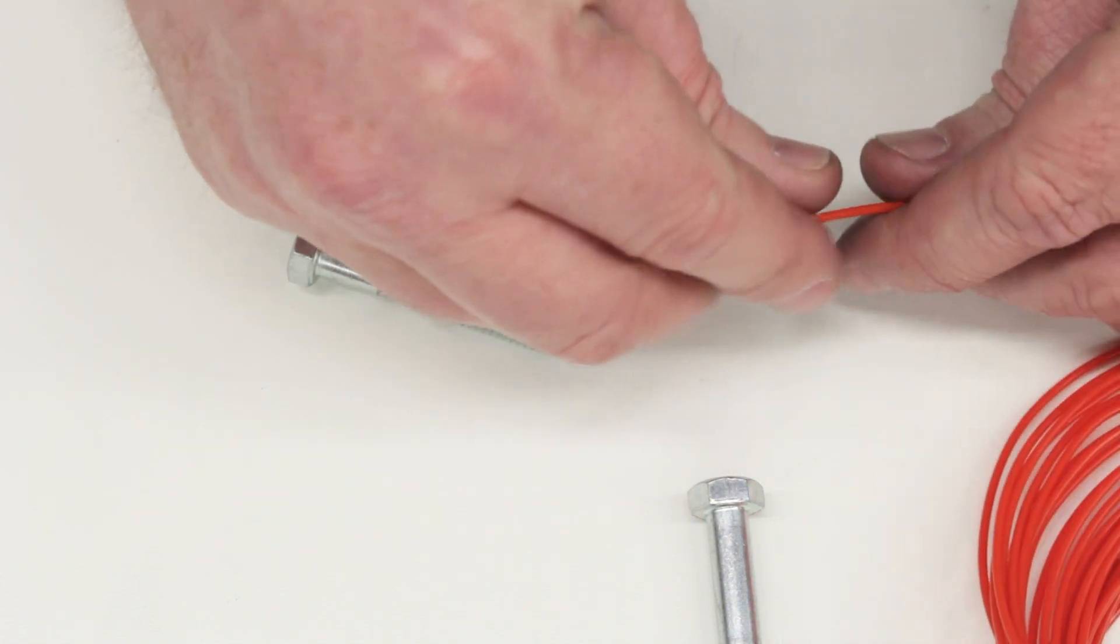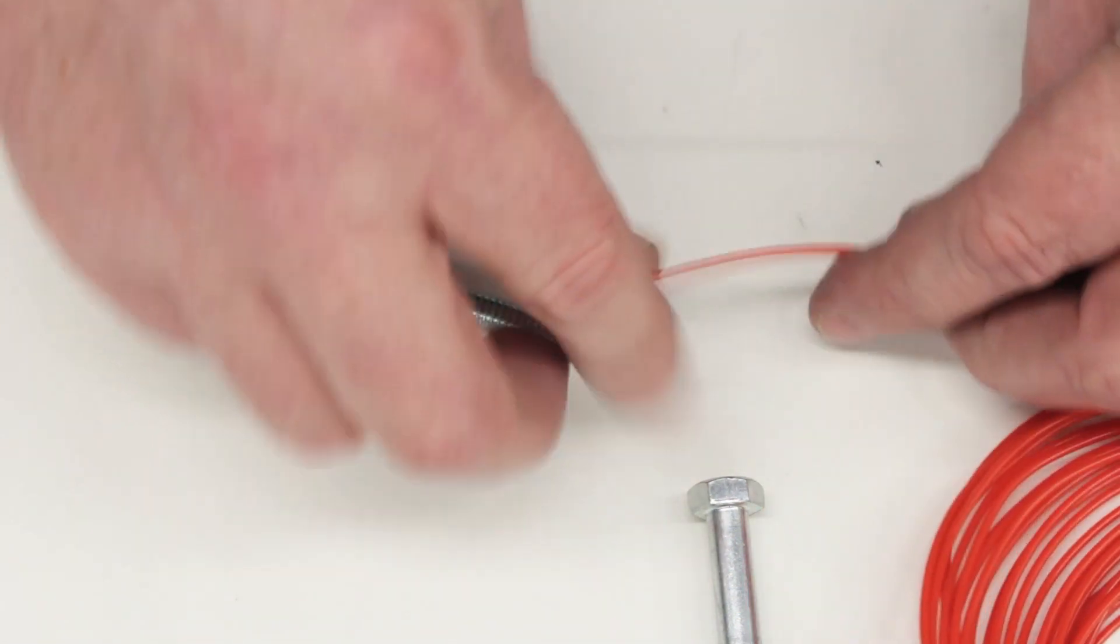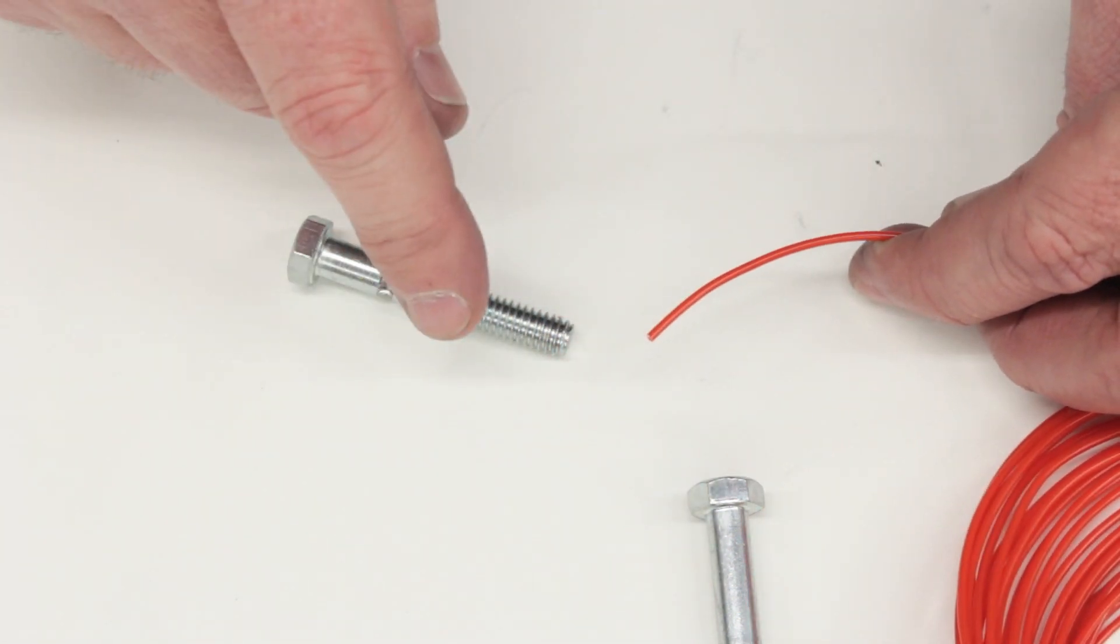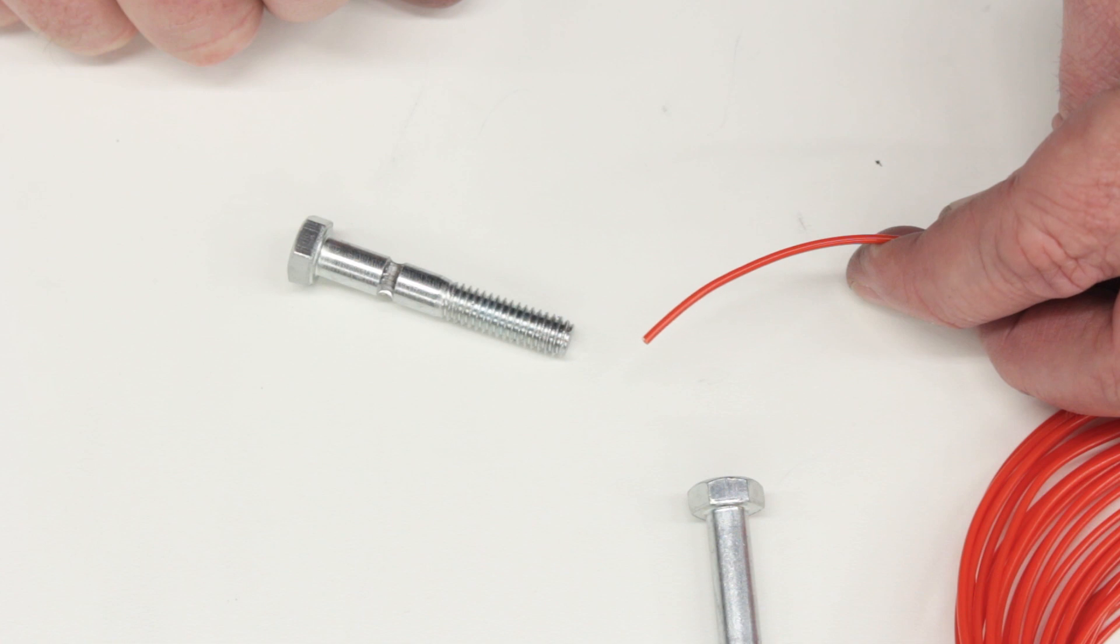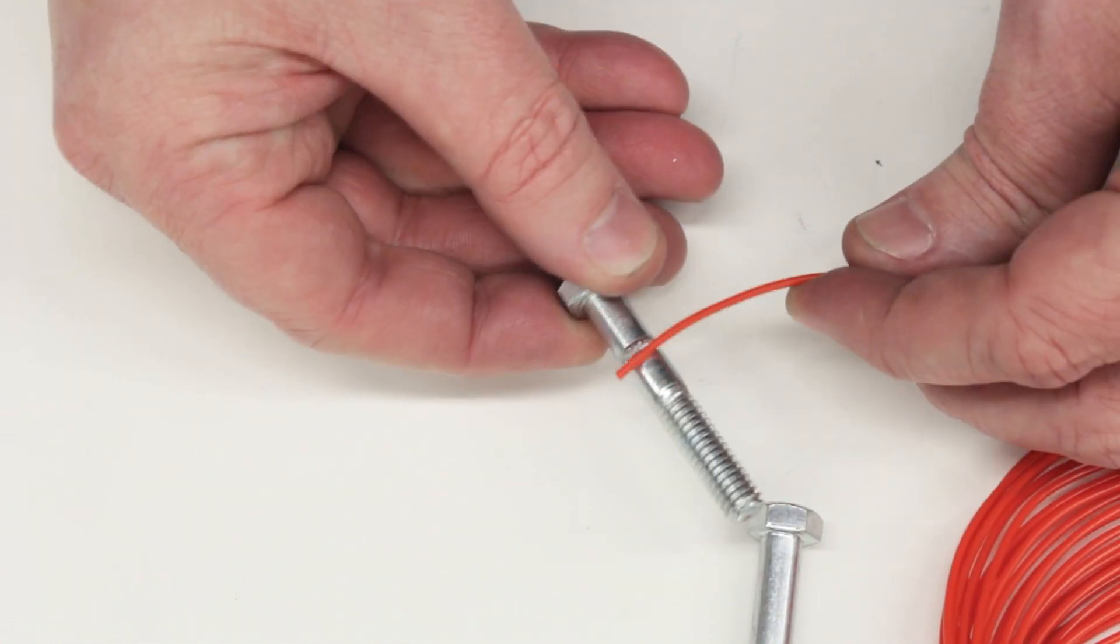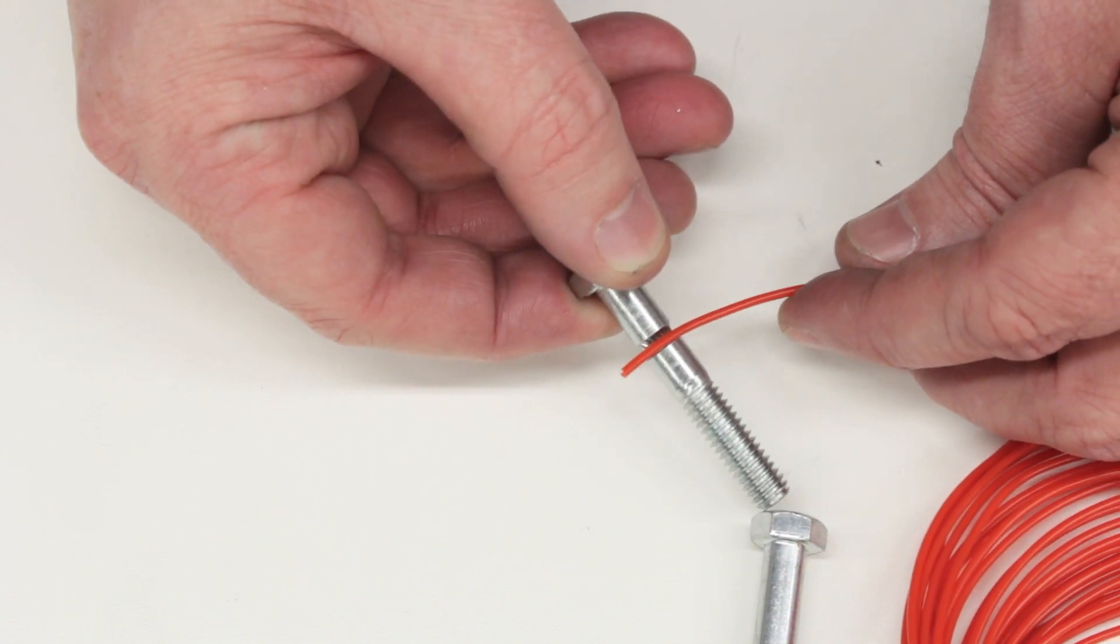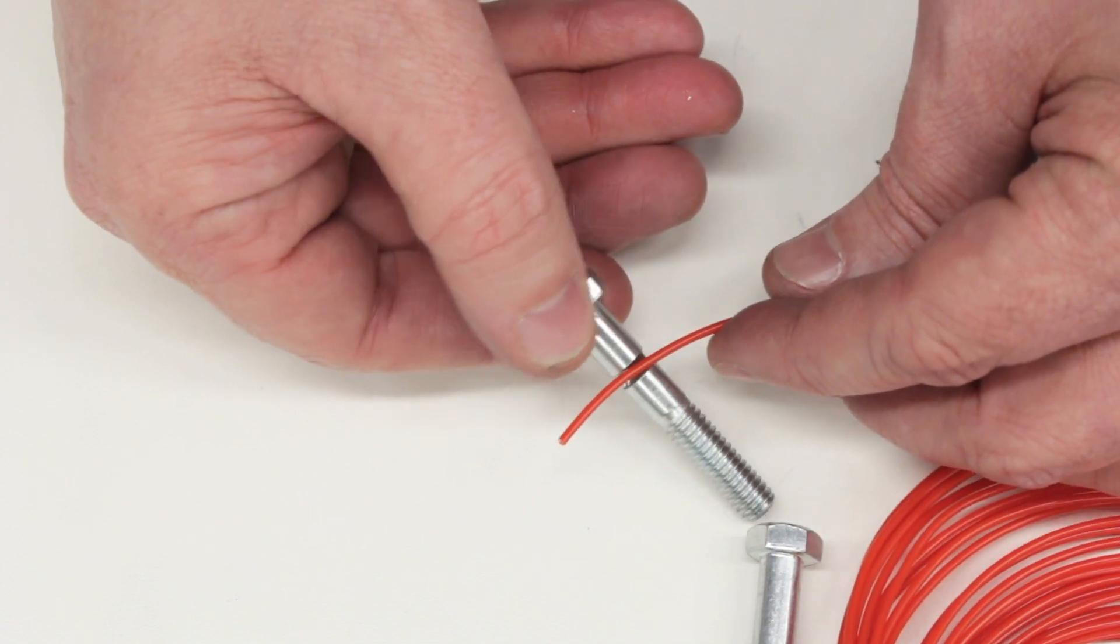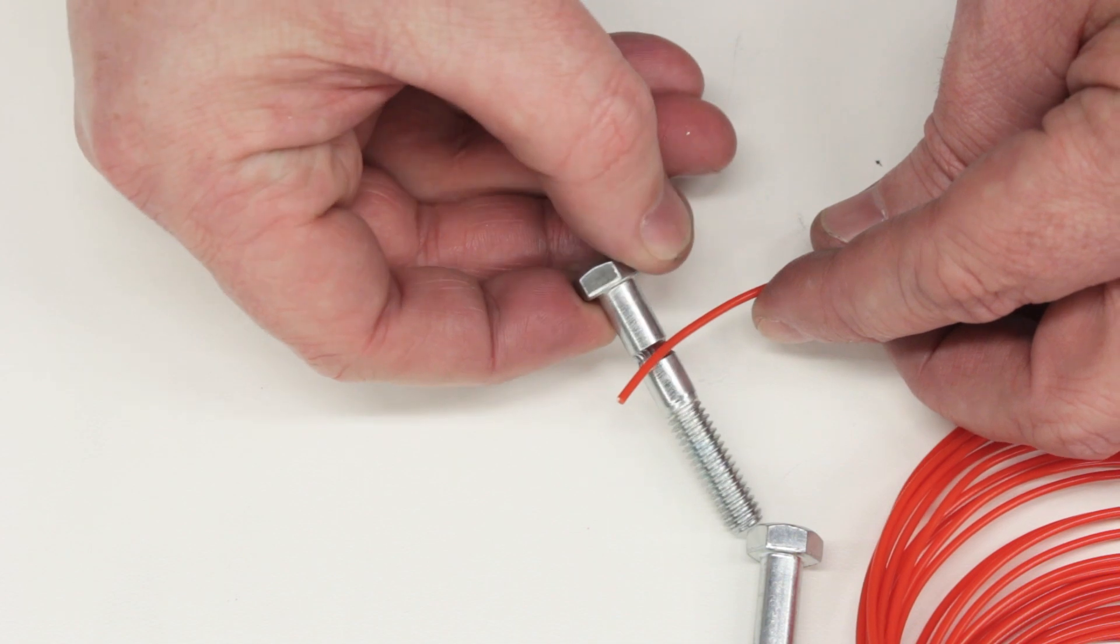And so the way this works, the printer feeds the plastic in, melts it, and squirts it out in layers to build up the parts. And so the hobbed bolt has these teeth and they engage the filament. And as the bolt turns, it drives the filament into and out of the extruder.